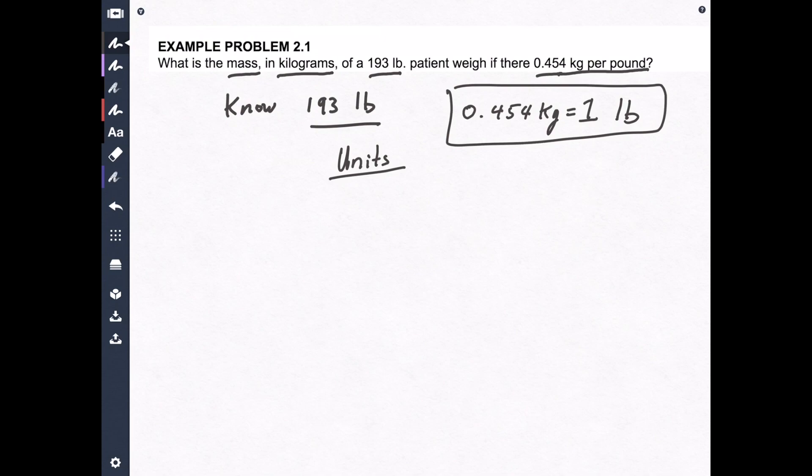Okay, so what unit are we starting with? We're starting with pounds. That's the unit we're starting with. How do I know that? Because the question told me. 193 pound patient. We want to go into kilograms. We want to end. And the end unit must be kilograms.